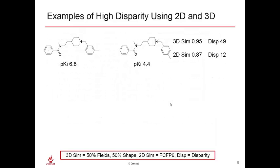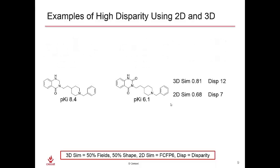We have a couple of examples to look at, using two-dimensional and three-dimensional metrics. In the first example, moving the methyl on the phenyl ring from the meta to the para position results in a large effect on activity. These molecules are highly similar in both 2D and 3D, so the distance between them is quite small, leading to high disparity in both cases. Another example is a ring substitution changing from a CH2 to a carbonyl, causing changes in activity of around two log units and affecting both 2D and 3D similarity metrics. The three-dimensional metric is also more robust to changes in rings and changes to the center of the molecule.